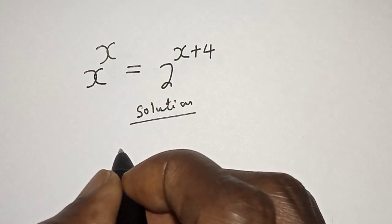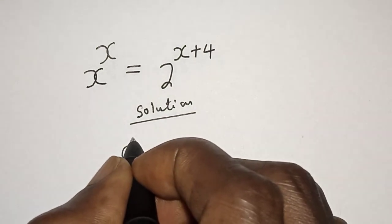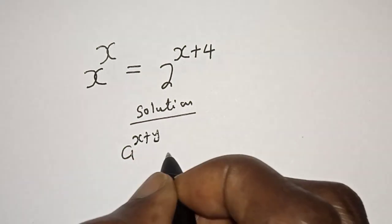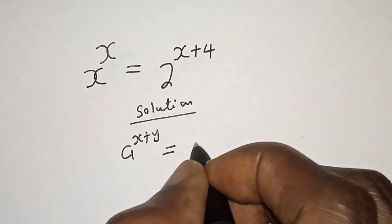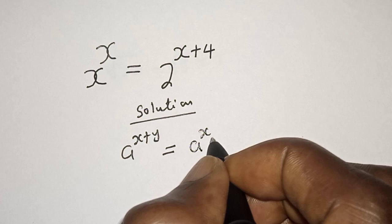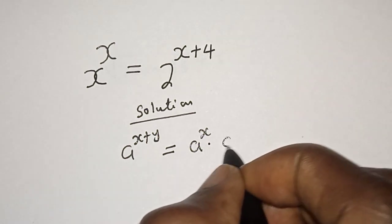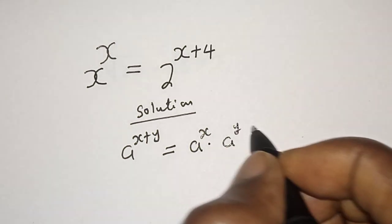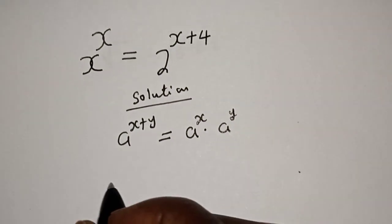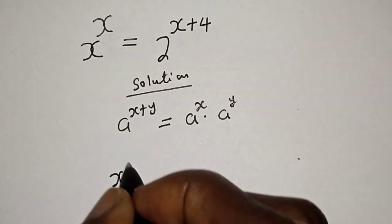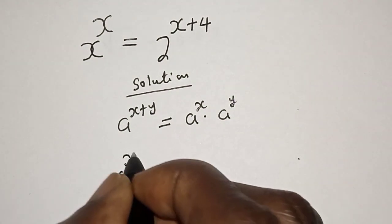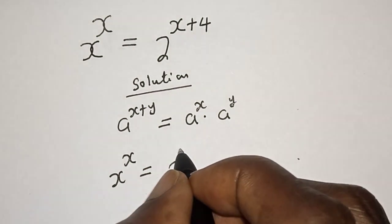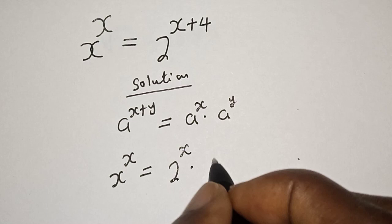Take note of this rule: a raised to power s plus y is equal to a raised to power s multiplied by a raised to power y. Then we have s raised to power s is equal to 2 raised to power s multiplied by 2 raised to power 4.